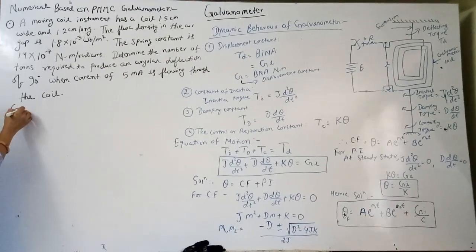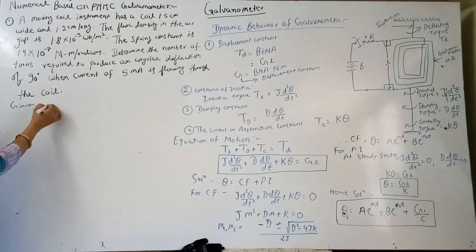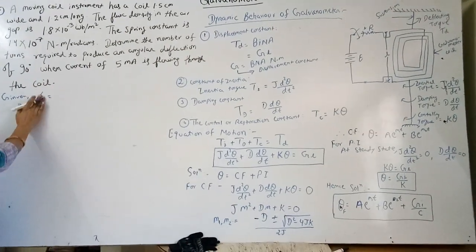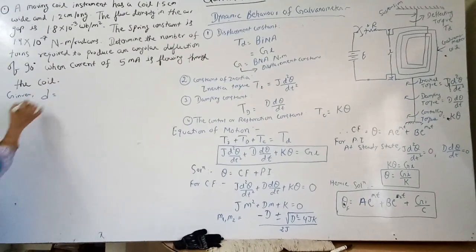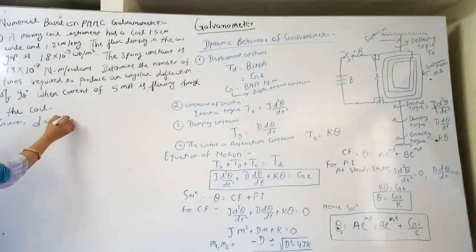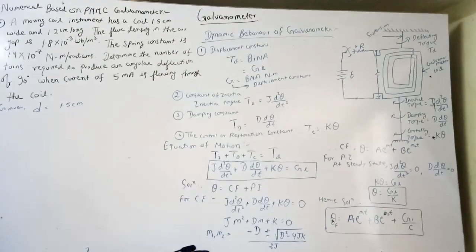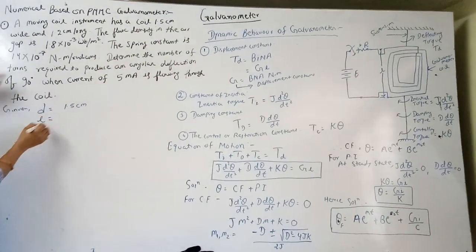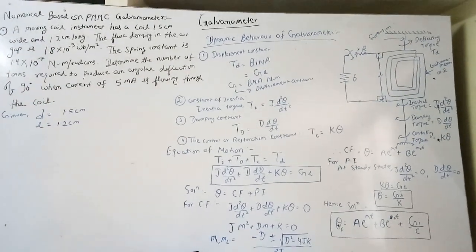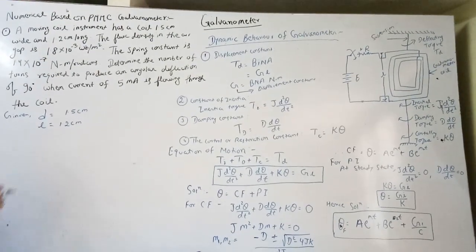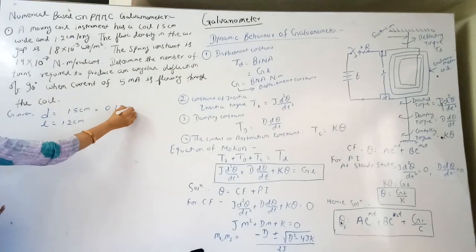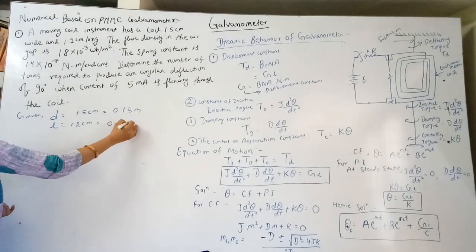First, what is given: breadth of the coil — we have chosen the value D for the width in the last lecture — that is D = 1.5 cm. And length of the coil is 1.2 cm. Converting to meters, D = 0.15 m and length = 0.12 m.